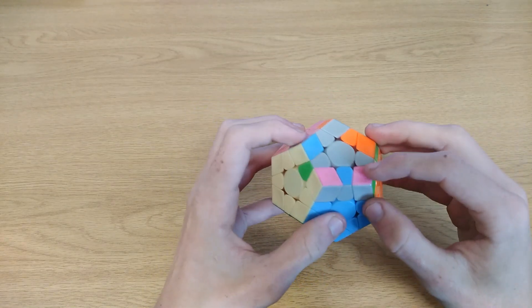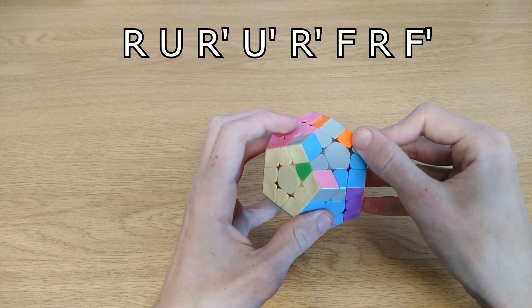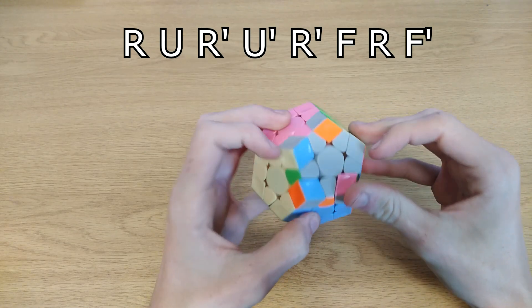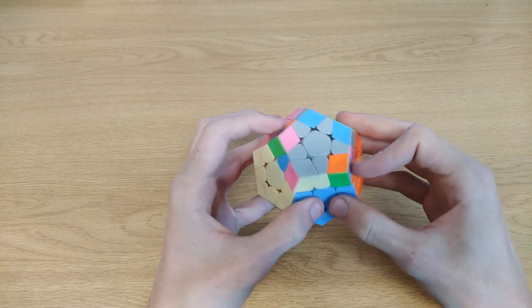So another algorithm you can use is this one, if you see that. R U R' U' R' F R F' and now one corner will be oriented.